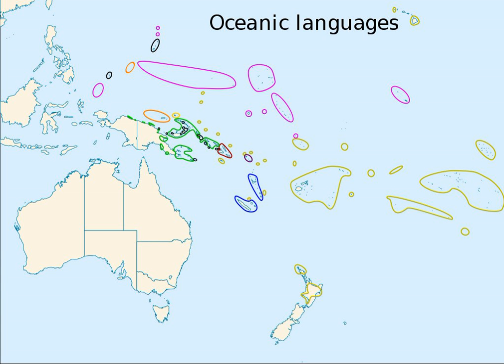Native languages of Oceania fall into three major geographic groups. The large Austronesian language family, with such languages as Malay, Indonesian, Tagalog, Filipino, and Polynesian languages such as Maori and Hawaiian.